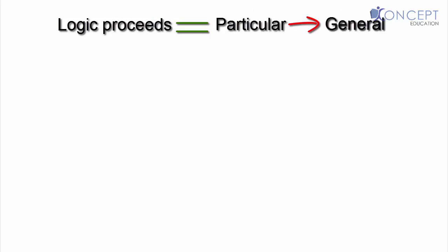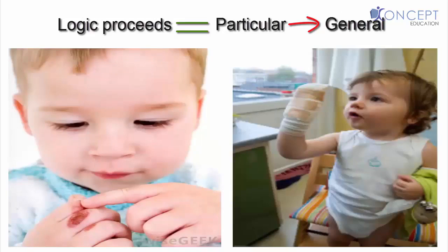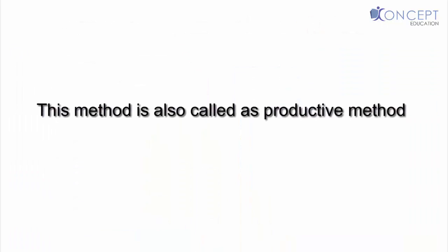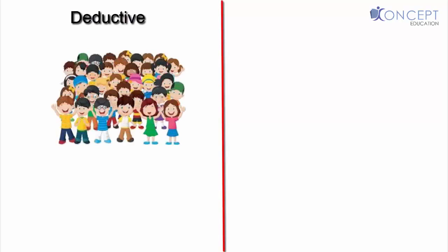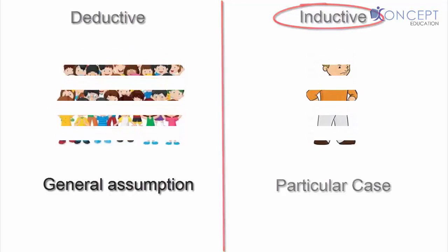So, the logic proceeds from particular to general. That means, if I burnt my hand, so will you, so will he, so will she. So, this method is also called as productive method, as we are producing some results. Generalizations are based on observations of individual examples. In deductive method, we were basing our conclusions on general assumptions. While here, we are basing it on specific individual conclusions. Many researches in macroeconomics is based on inductive method.